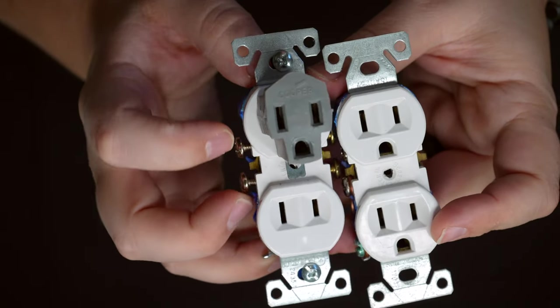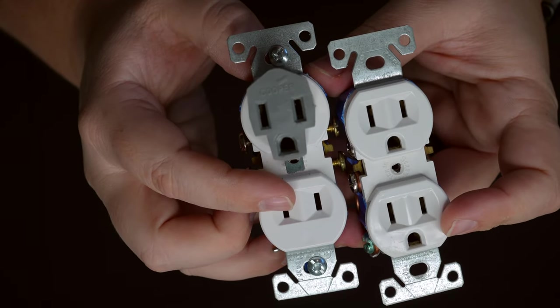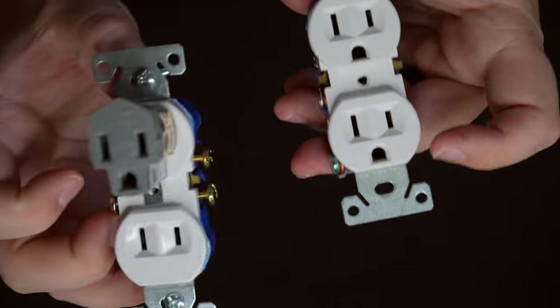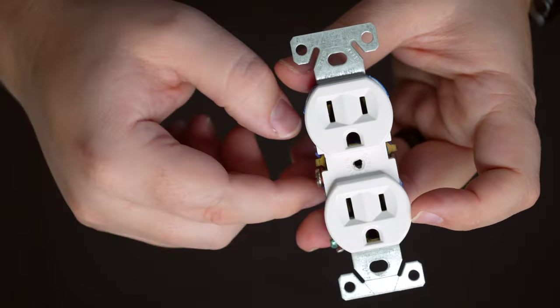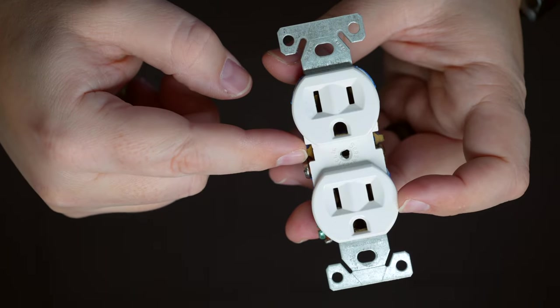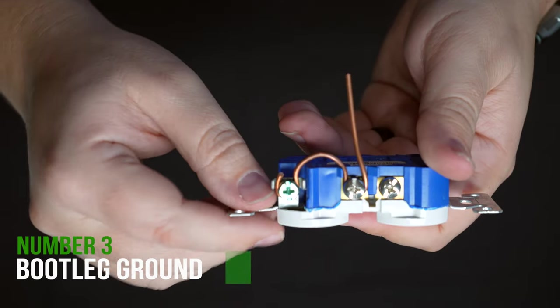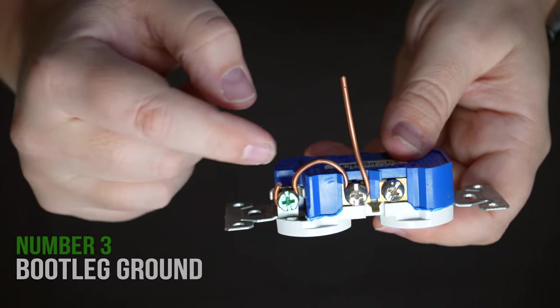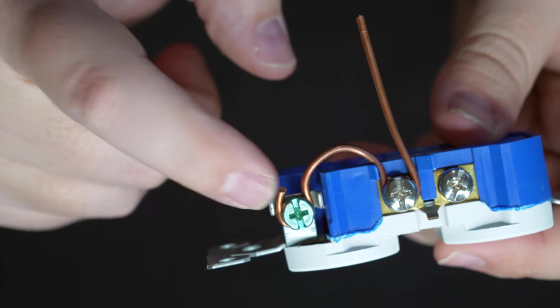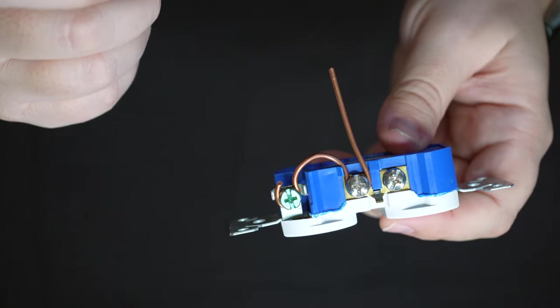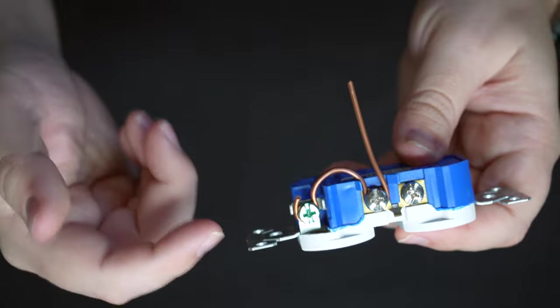Now that brings me to another big issue, which is instead of using these cheater plugs in this two prong or ungrounded house wiring situation, you'll see DIYers go ahead and replace the receptacle with a typical receptacle or typical outlet that you would see. And in order to get around the issue of it not showing that it has a ground, you'll see something like this in place. And this is called a bootleg ground. Basically what a bootleg ground is, it's connecting the neutral terminal to the ground terminal of the receptacle in order to trick the testers to show that this receptacle actually has a ground when in fact it does not.